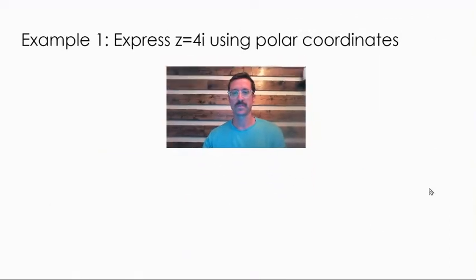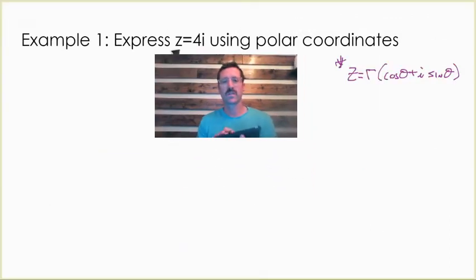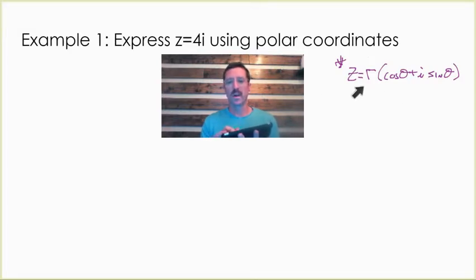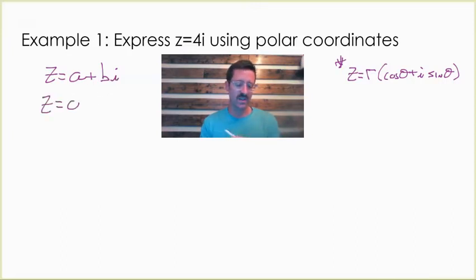Now let's look at some examples. We're about to convert this complex number to its polar form. What we need to identify first is our a value and our b value. Complex numbers take the form of a plus bi. I'll sometimes refer to it as x plus yi, but our a value for this particular one is zero. It doesn't have a real number. The a value is zero, and our b value is four.